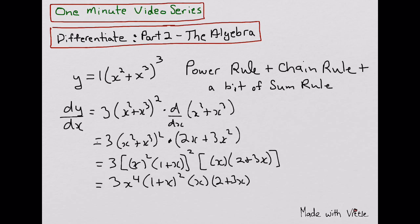Combining 3x to the 4th and the x, that would give me 3x to the 5th, 1 plus x squared times 2 plus 3x, and finally generally write these in order. I can rearrange this a bit. This would be 3x to the 5th, x plus 1 squared times 3x plus 2.